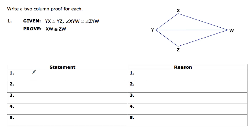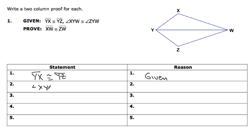To start off with, we're going to take our first statement: YX is congruent to YZ, and we're going to write that down as given. And then our second statement: angle XYW is congruent to angle ZYW. And again, that's given.